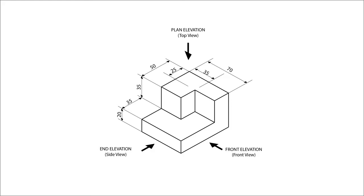Suppose I tell you to draw this isometric drawing in first angle orthographic projection. How will you do it?